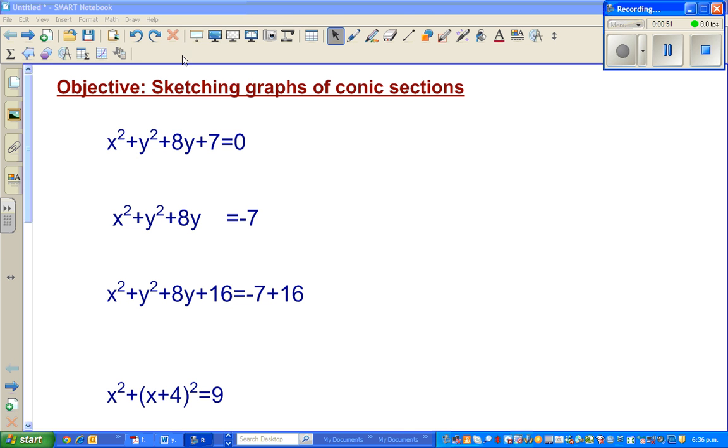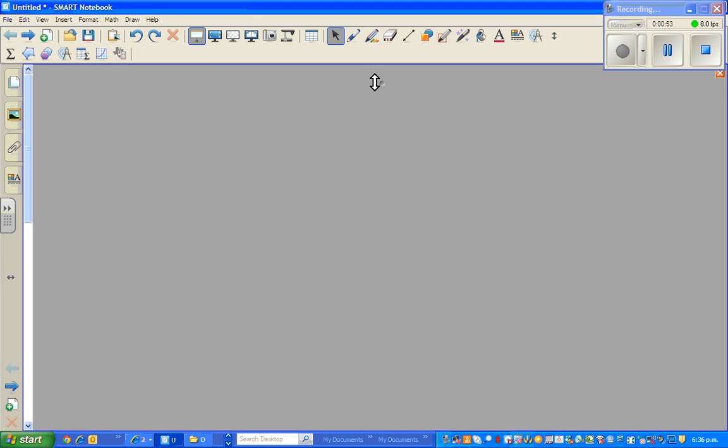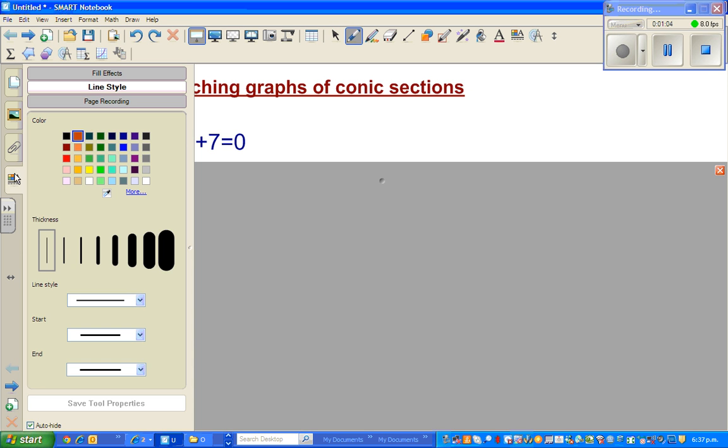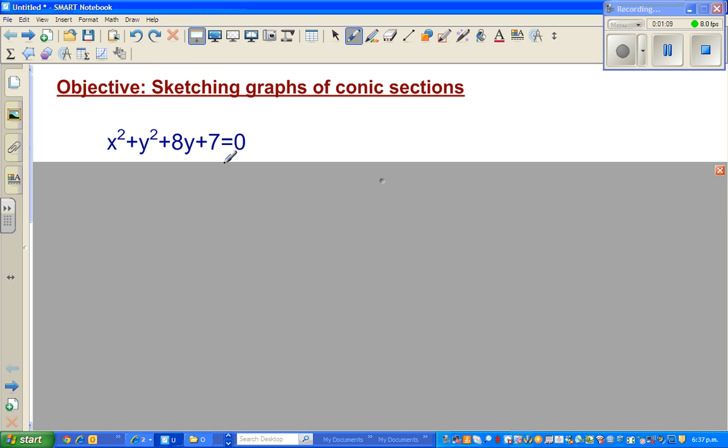This is a lesson of how to graph a conic section equation. Now, you've got an equation like this, which is x squared plus y squared plus 8y plus 7 is equal to 0.